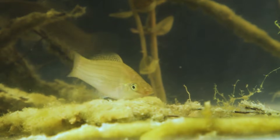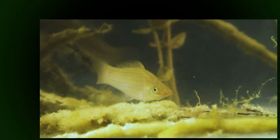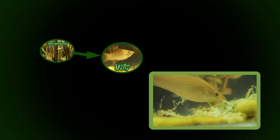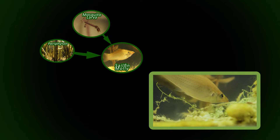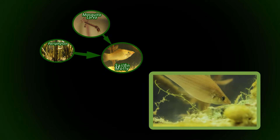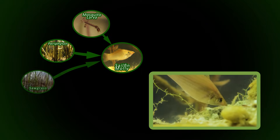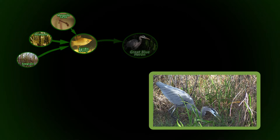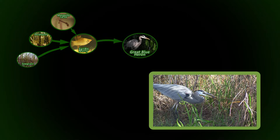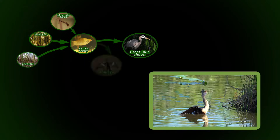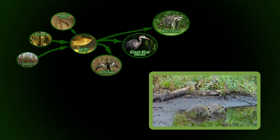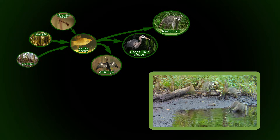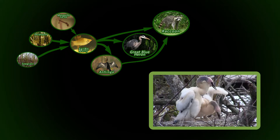But then there's the sailfin molly. It eats Paraphyton too, as well as mosquito larvae. The molly also eats little bits of submerged sawgrass. The great blue heron would scarf down a sailfin molly if it could. So would an anhinga. So would a raccoon. The raccoon would also enjoy a baby anhinga.